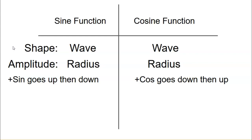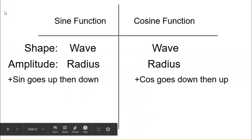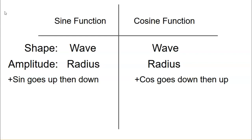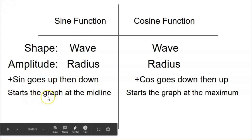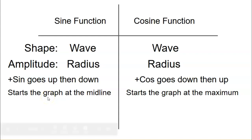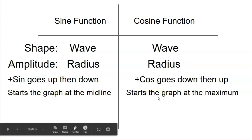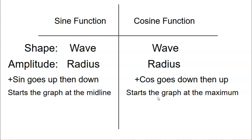The first key difference is that sine starts by going up, then comes back down. Cosine, however, starts by going down — it gets smaller, bottoms out, then comes back up. This really affects where the wave starts. The sine function starts its wave at the midline, goes up, comes back down to the bottom, and returns to the midline. Cosine starts at the very top of the wave — the maximum — then falls all the way down and comes back up. Both have the same wave shape; the only difference is their starting point on the wave.